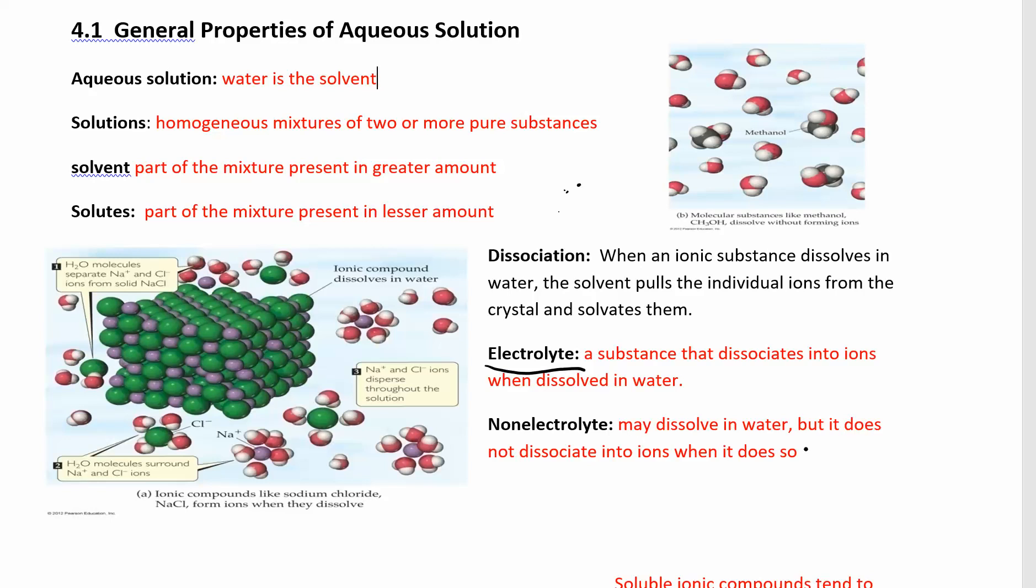A non-electrolyte is something that does not dissociate. It may dissolve in water, but it does not dissociate into ions. So an electrolyte is an example of something like sodium chloride. When you take that and put it in water, it's going to dissociate into sodium ions and chloride ions. It's an ionic compound.